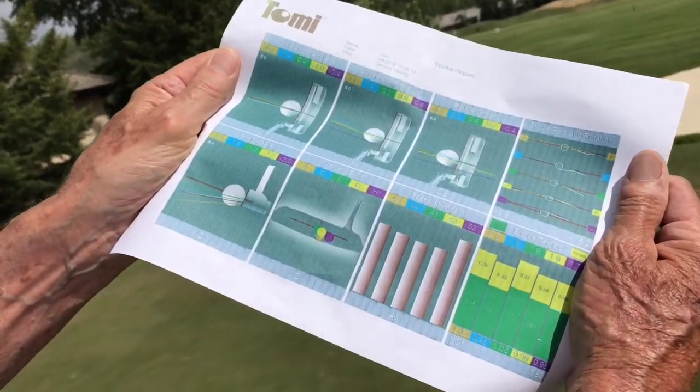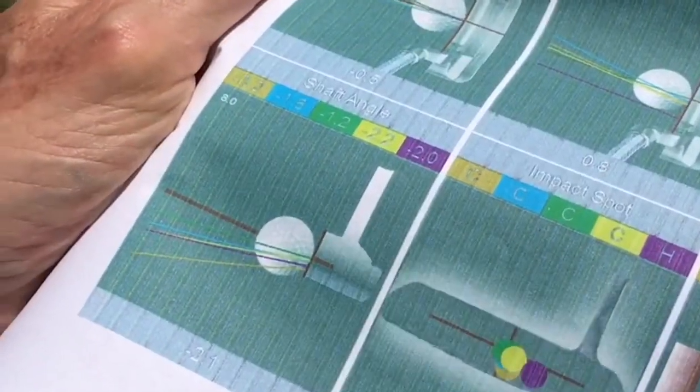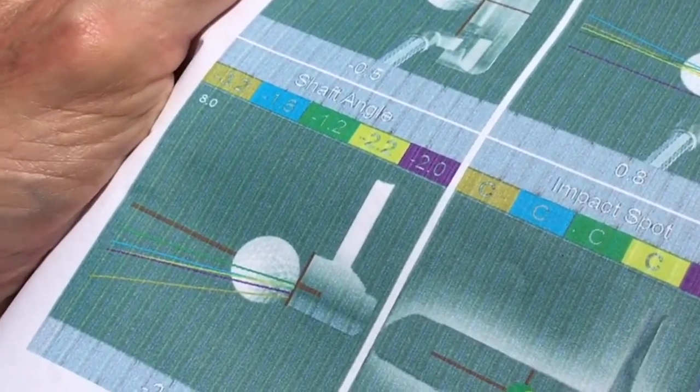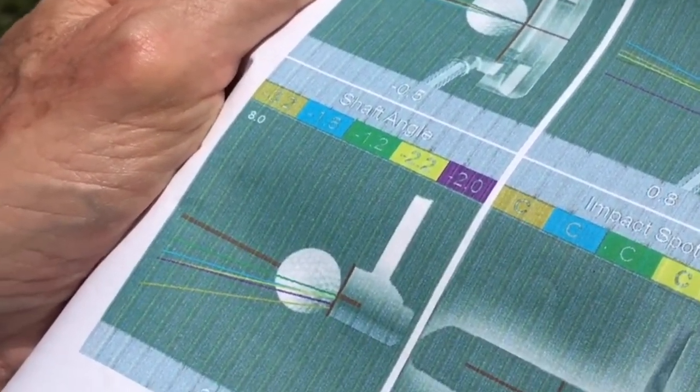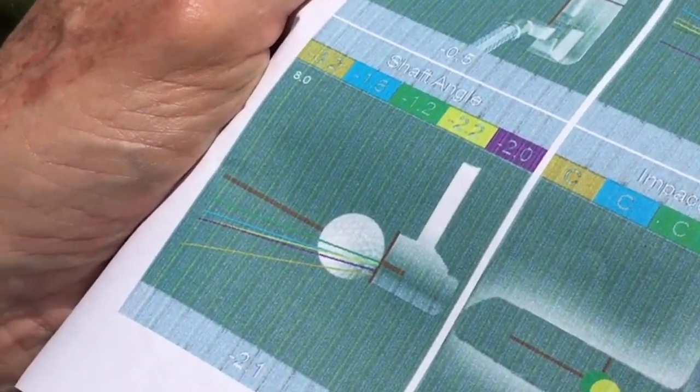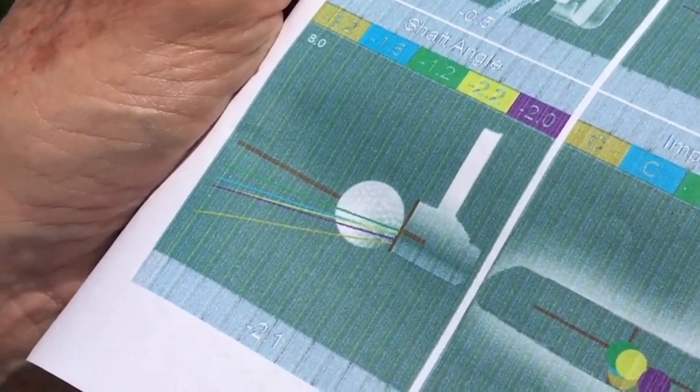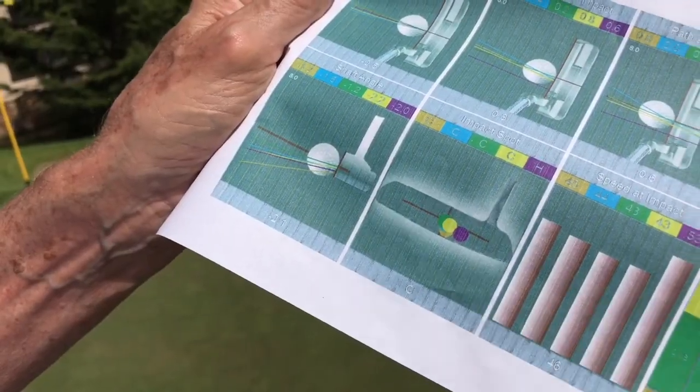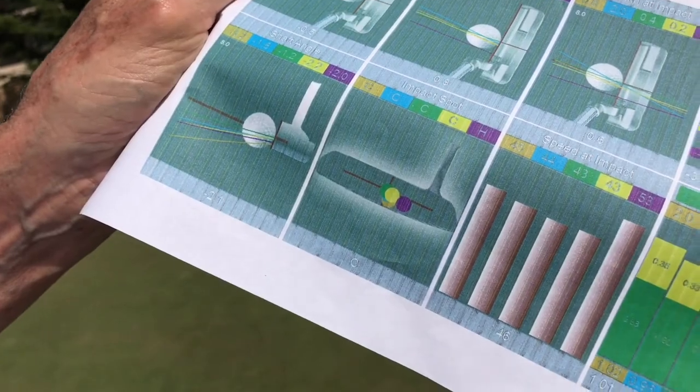The other thing that's very important is your shaft angle. You want the shaft relatively neutral at impact. If your hands are too far ahead, you drive the ball into the ground. If your hands are too far behind at impact, it lofts the ball up in the air too much and the ball starts bouncing at impact.